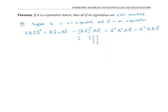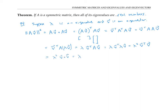Since V is supposed to be an eigenvector for the eigenvalue lambda for A, A times V is just lambda times V. Let me pull the lambda out. And once again, A times V is just the same thing as V dot V, or the same thing as the length of V squared.